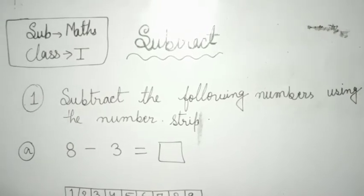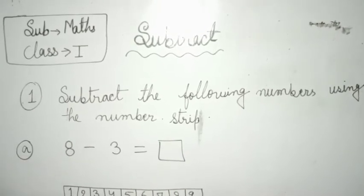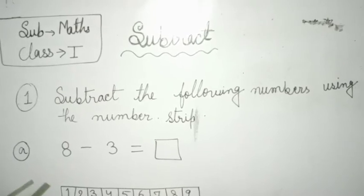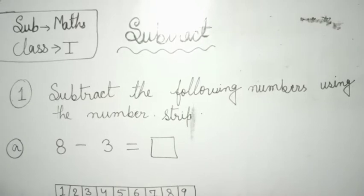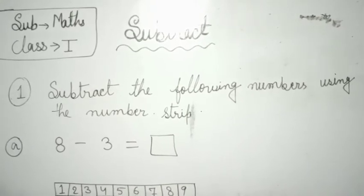Our first question is 8-3. There is 8. So here is our number line and we will go the same as we had done in addition on number line.